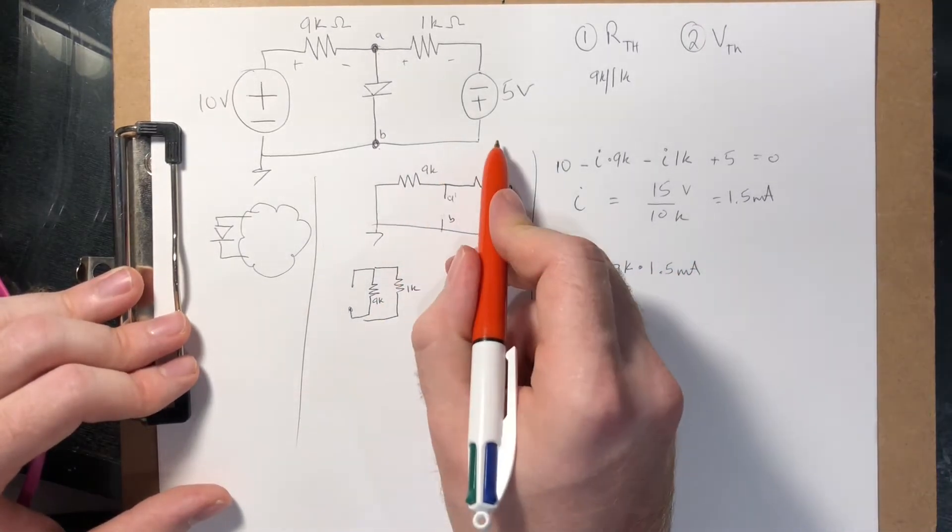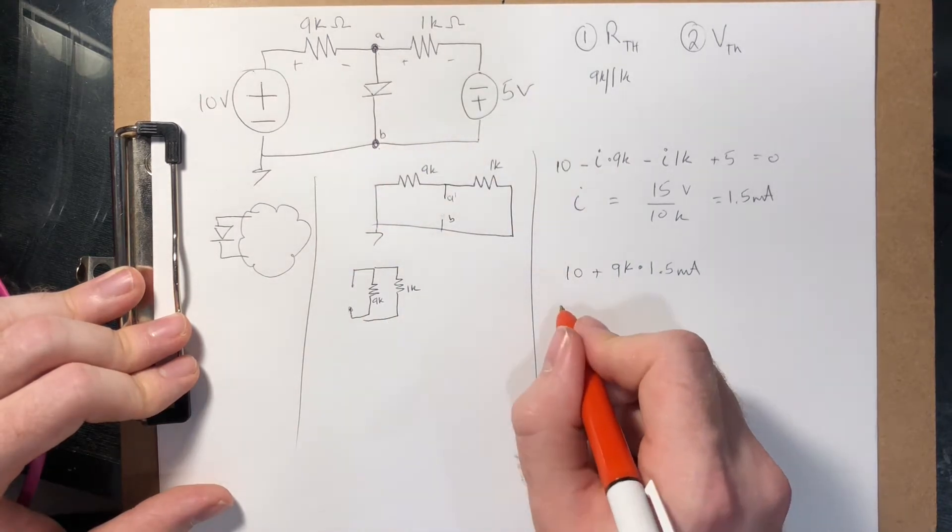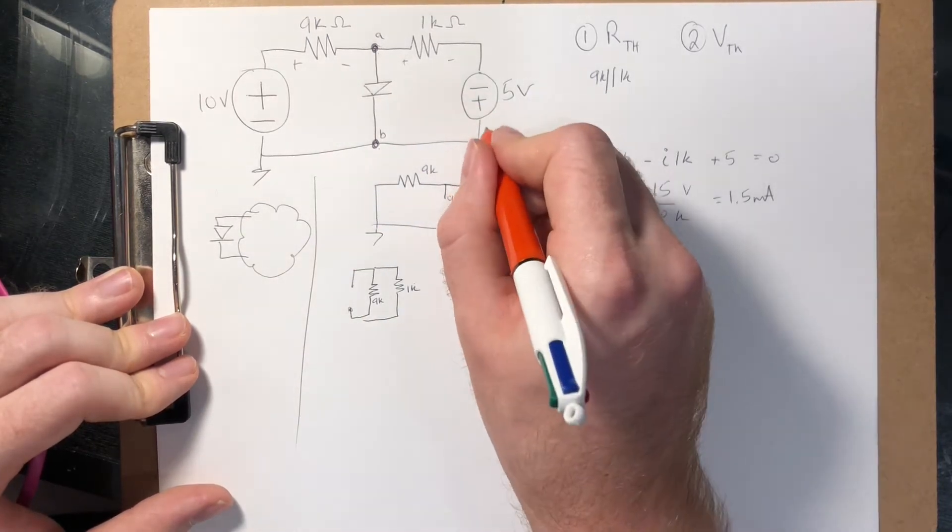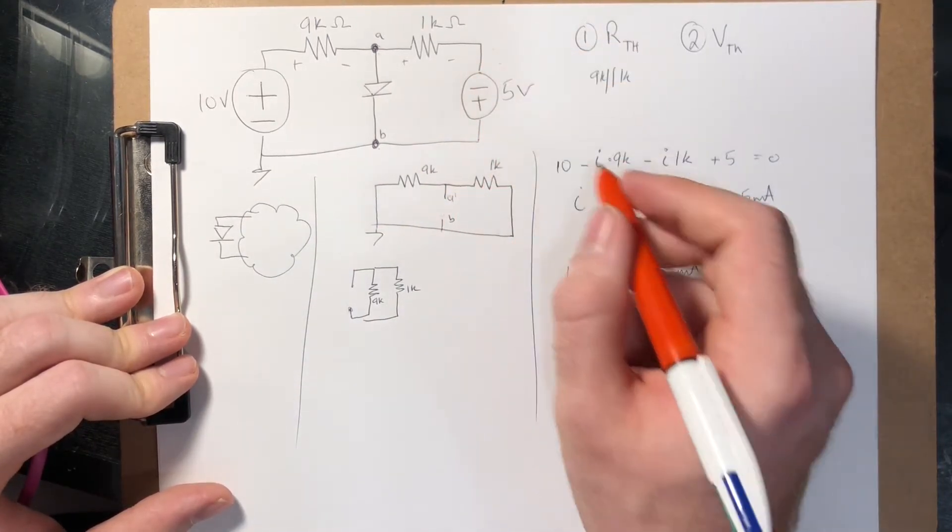And equivalently, if we wanted to find it from this way, we would say it's minus 5 because we're jumping down by the 5 volts here.